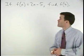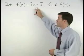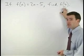In other words, if we put an x into our function, we get a 2x minus 5 out. So what happens when we put a 4 into the function?